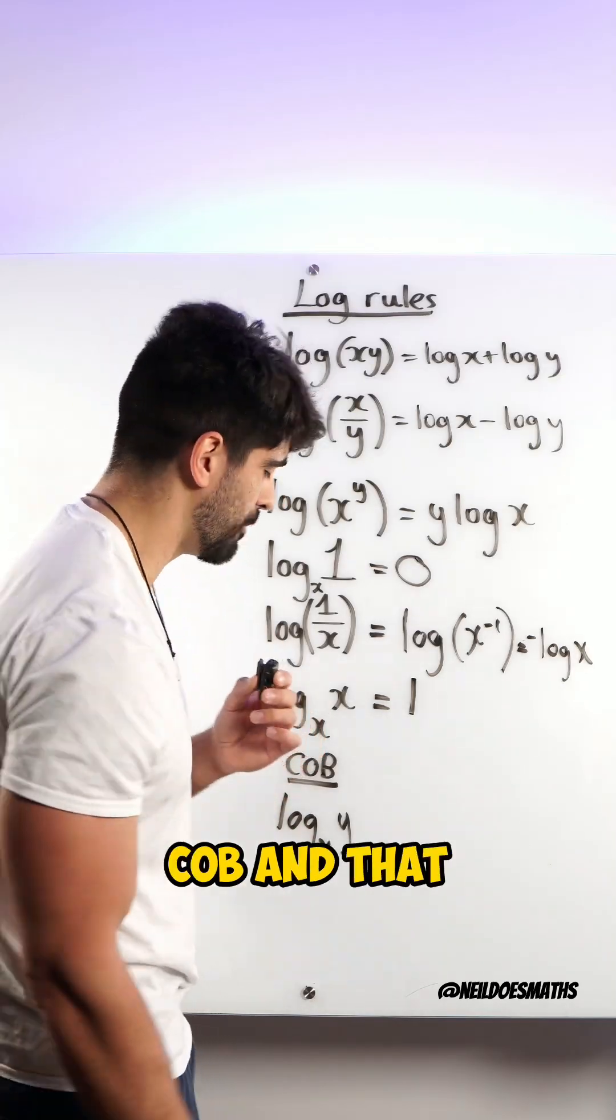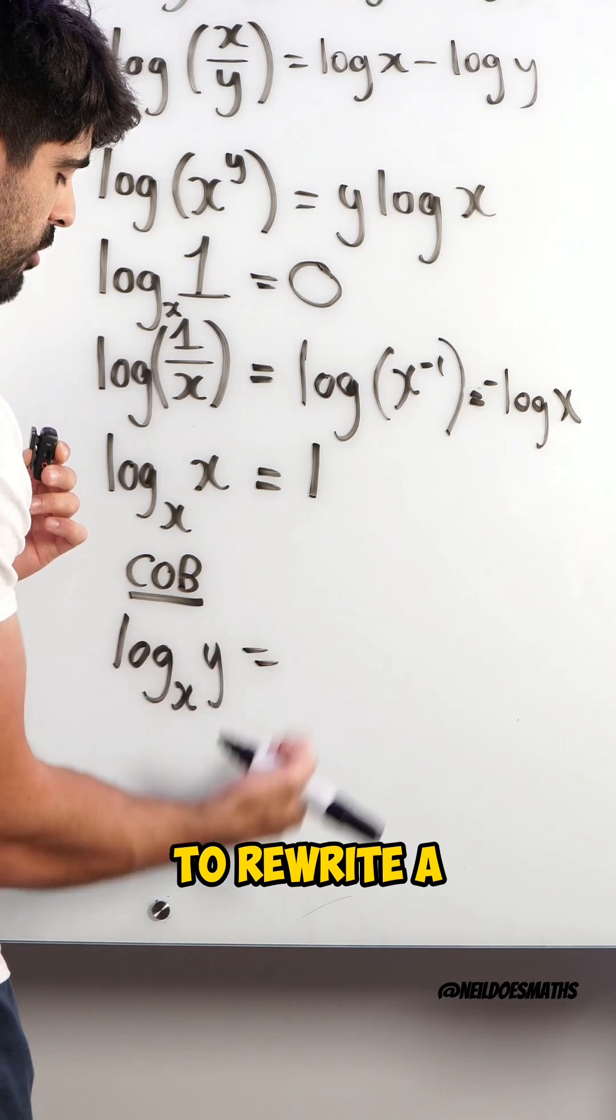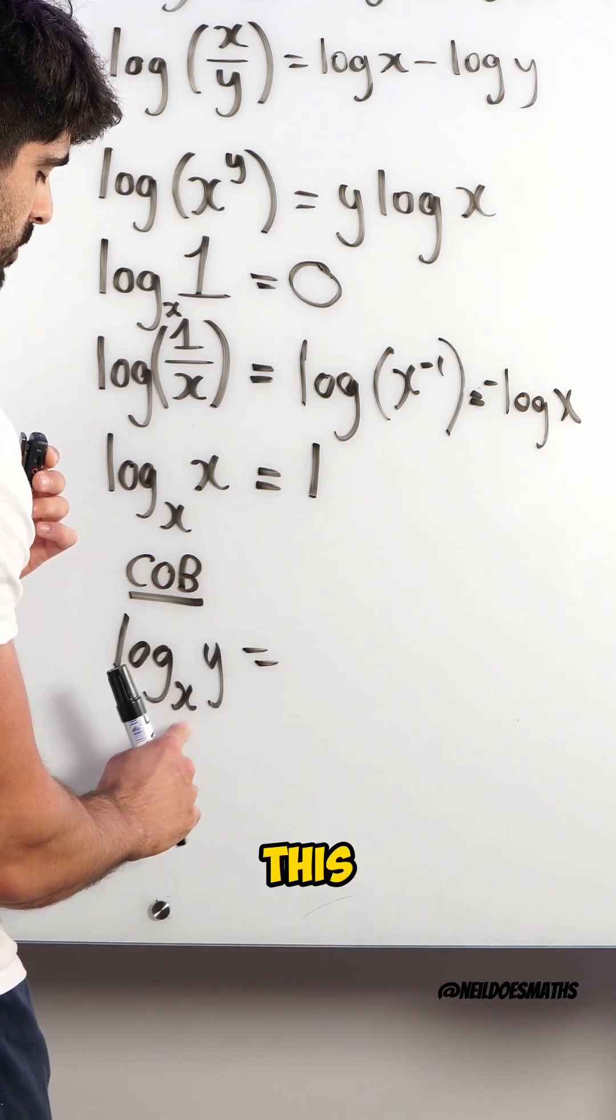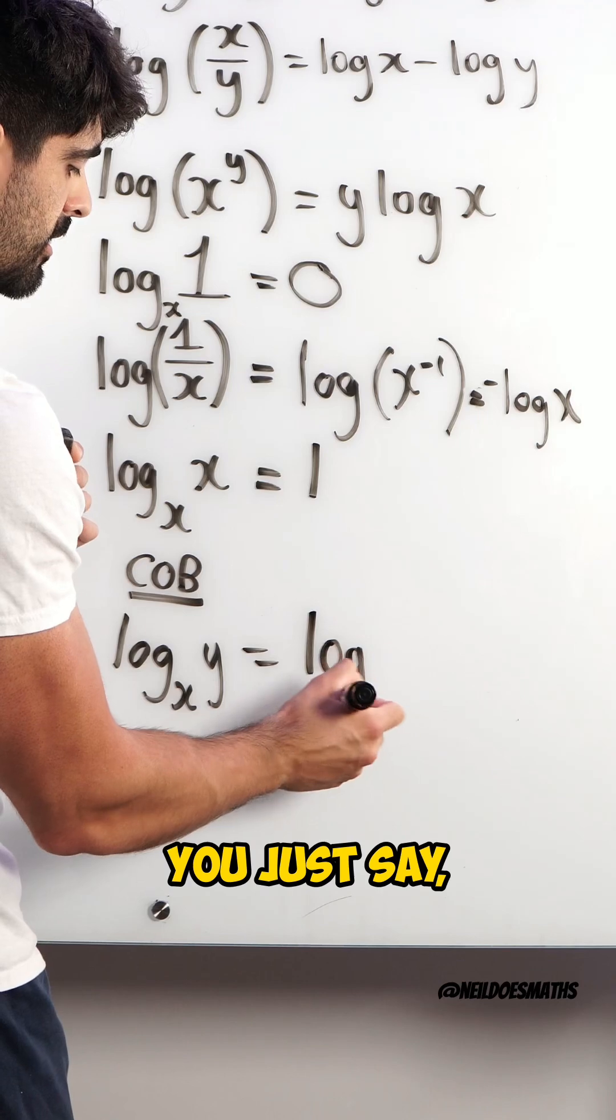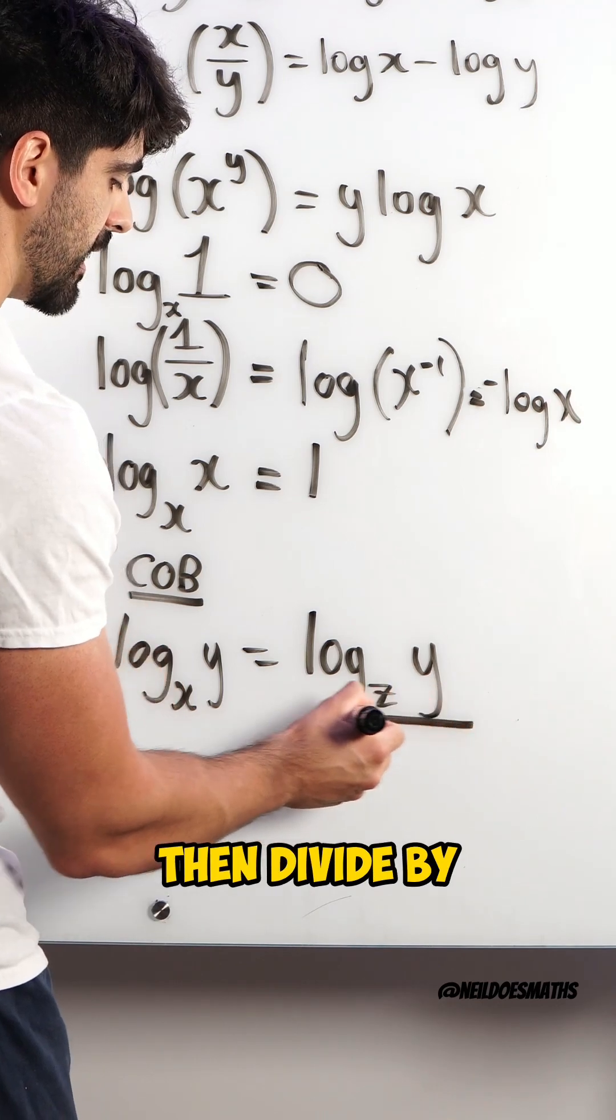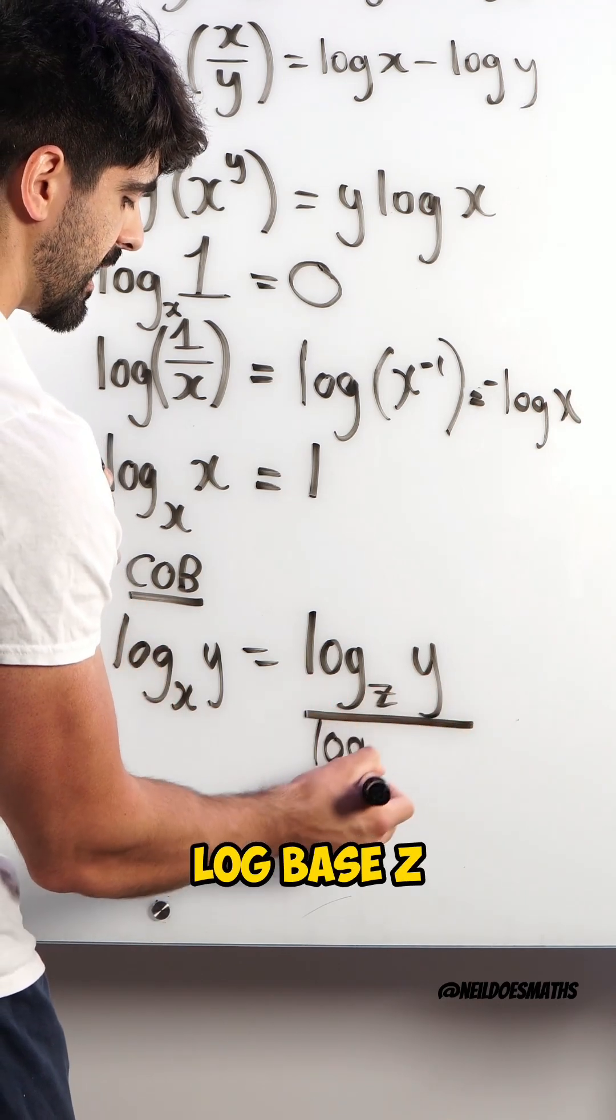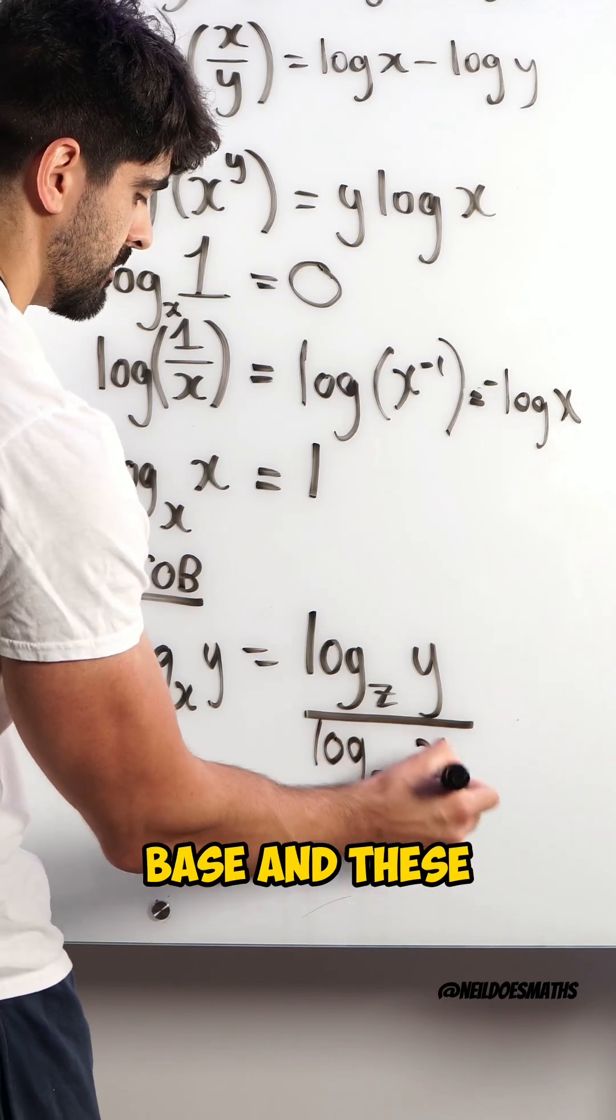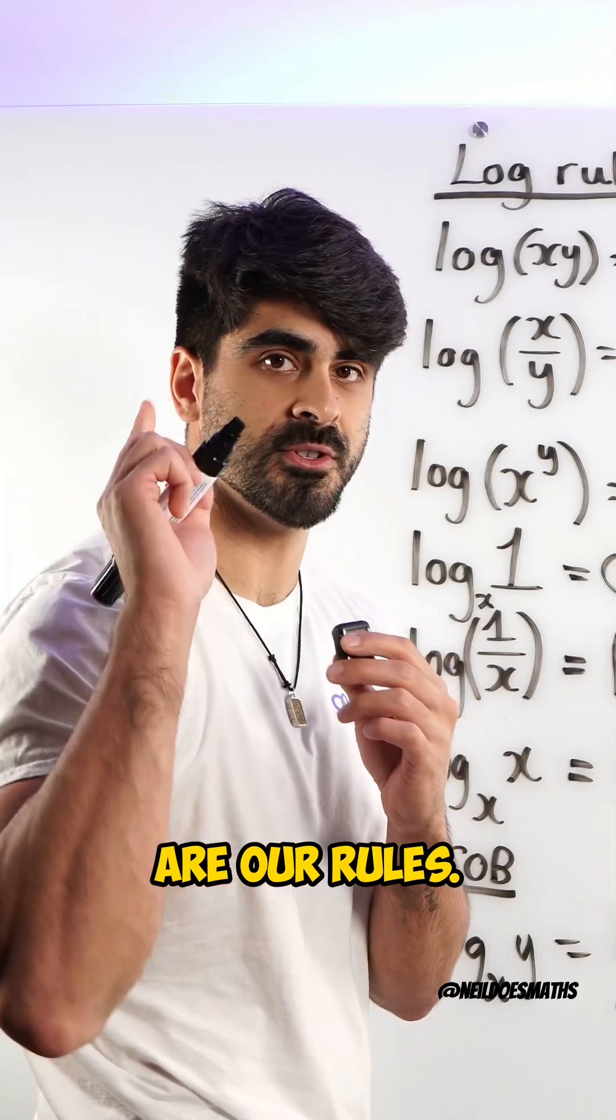Next one, change your basis. If you want to rewrite a log with a different base, this one is x. You just say, what new base do you want? I'm going to change x to z. But you then divide by log base z of the old base. And these are our rules. Now let's go.